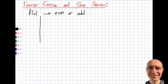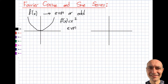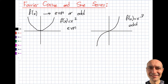Let's say f(x) = x². If I plot this, you'll see it's symmetric with respect to the y-axis — this is called an even function. Now let's plot f(x) = x³. What happens here is it goes from the first quadrant to the third quadrant. It's asymmetric in that sense, and this is called odd. That's what we mean by even and odd functions.